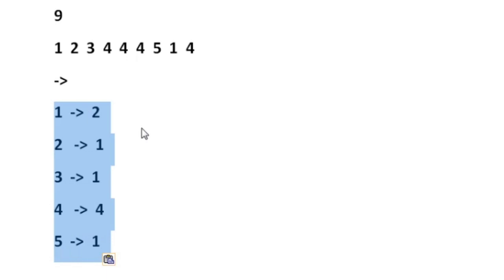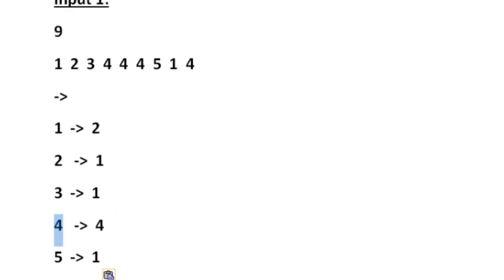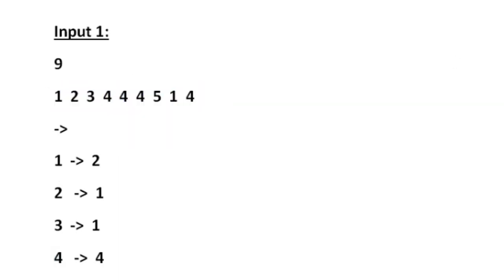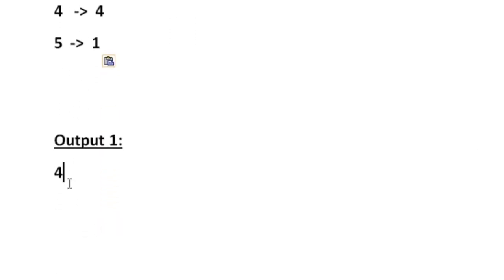Now we have to find the digit which has occurred the most. The maximum occurrence is 4 and the digit is 4. So the digit 4 has occurred the maximum number of times out of these 9 integers. Our output for sample input 1 is 4, so we print 4.